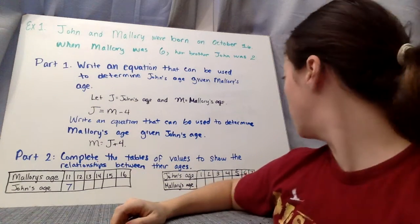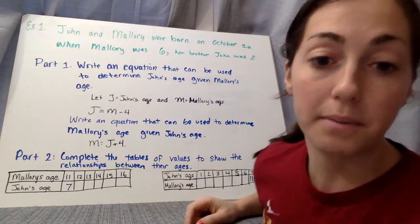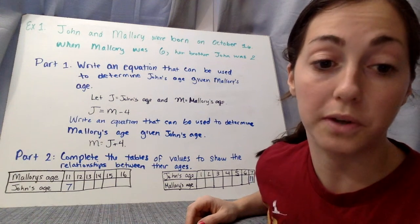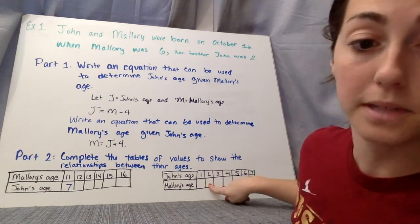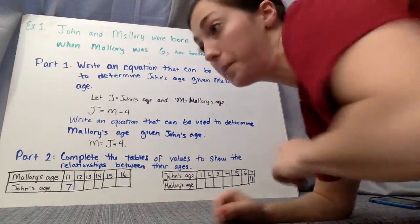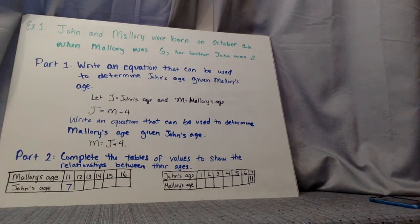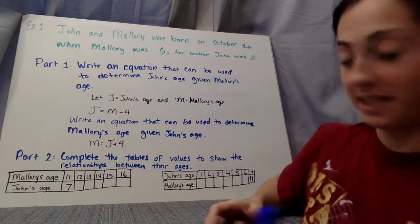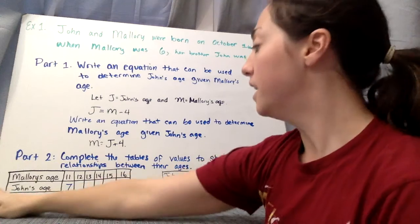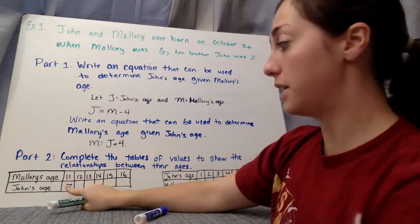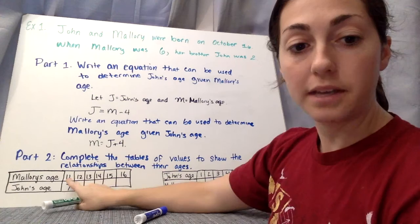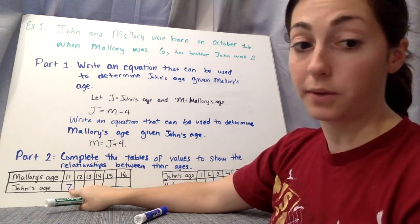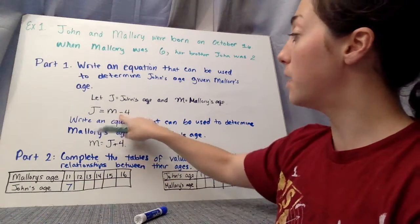All right, let's work on this one, where we have complete the table of values to show the relationship between their ages. So start copying down those tables, and then we're going to fill it in together. So if Mallory is 11, I started it out. If Mallory's 11, how old is John? Well, I could use my equation. 11 minus 4 is 7. If Mallory is 12, 12 minus 4 is 8.